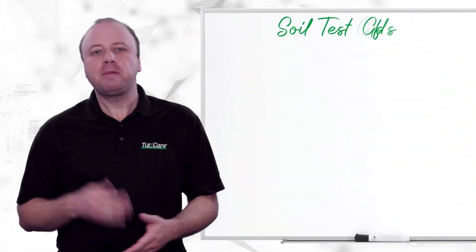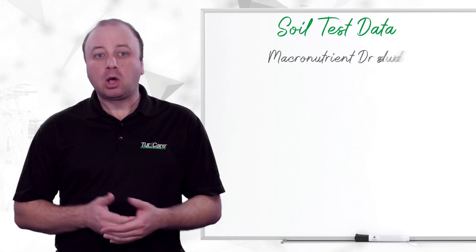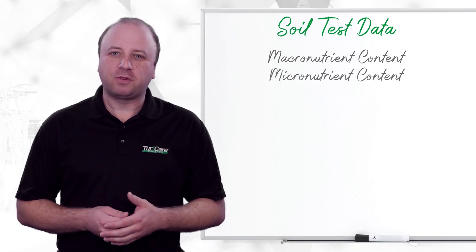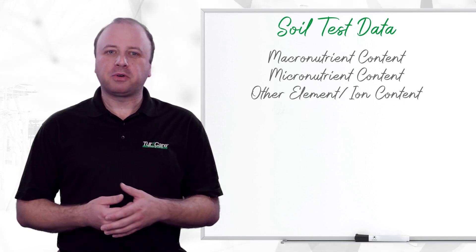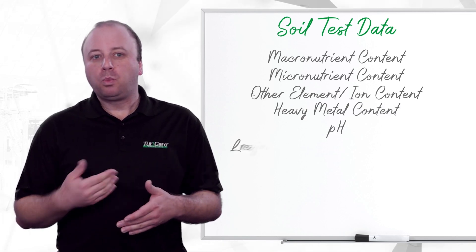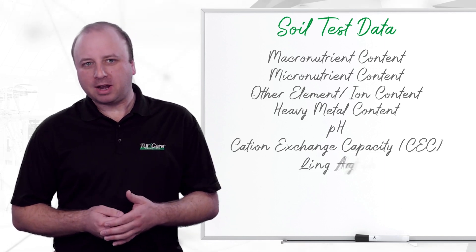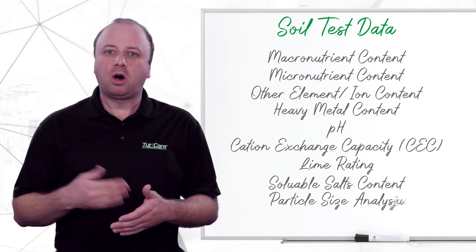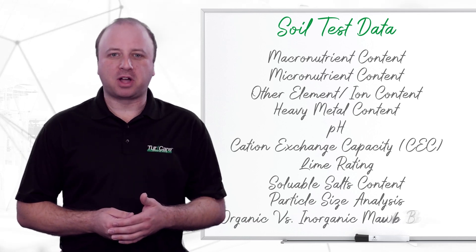A complete panel of standardized tests typically includes all of the following data: macronutrient content, often with fertilizer recommendations; micronutrient content, again often with fertilizer recommendations; other element or ion content; heavy metal content; pH; cation exchange capacity with computed percent cation saturation; excess lime rating; soluble salts content; particle size analysis, often with soil texture interpretation; and organic versus inorganic matter content.